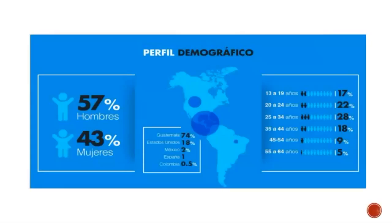Volviendo a nuestro punto, el reto es hacer un match entre nuestro cliente ideal y el cliente al que se dirige el medio. Por ejemplo, este PrensaLibre.com va dirigido, como lo dice el documento, a un 57% hombres, 43% mujeres, un 74% de Guatemala, un 18% de Estados Unidos y el resto dividido en otros países. Tienen un fuerte grupo de 25 a 34 años y uno de 20 a 24. Si nuestro target tiene demográficos similares, entonces podemos concluir que este puede ser un buen medio para anunciar nuestro producto o servicio.